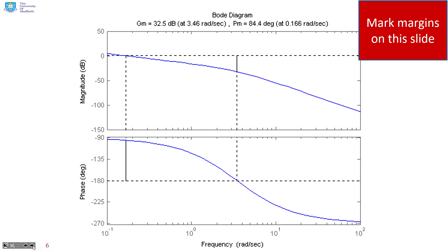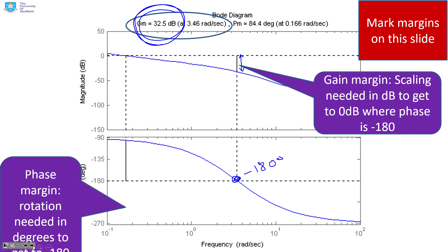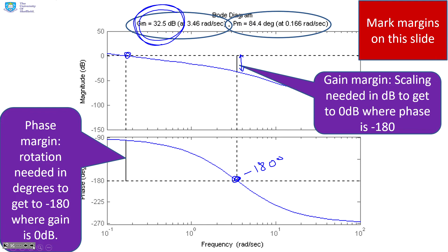Here's an example of how those margins might be calculated. I've demonstrated the gain margin. I've started from minus 180 degrees and said what multiplicative scaling will get me to 0 decibels at that frequency. This solid line shows if I move the Bode plot up by 32 decibels, it will become 0 decibels. So my gain margin is 32 decibels. With the phase margin, we start at 0 decibels and ask, how much phase rotation do I need to get to minus 180 degrees? Here you can see the phase rotation is 84 degrees. So that is your phase margin.